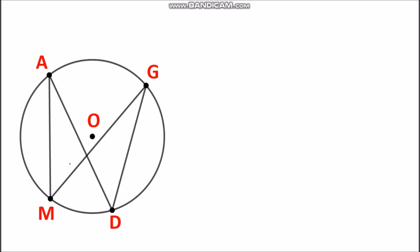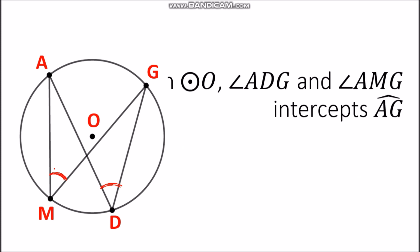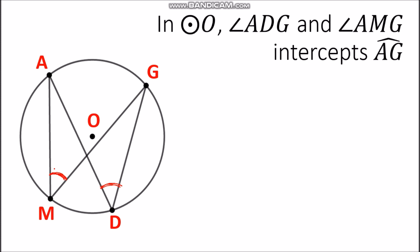Let's take a look at circle O. We have two inscribed angles here: angle ADG and angle AMG. They are inscribed angles, and if you notice, these two inscribed angles intercept the same arc, which is arc AG.